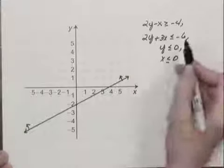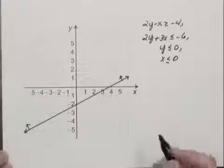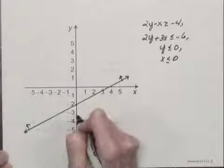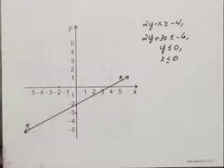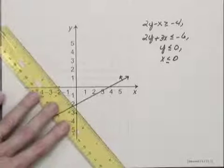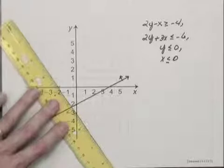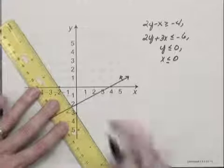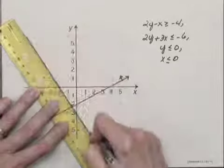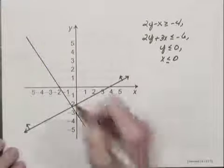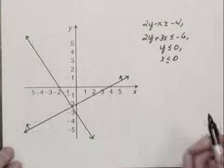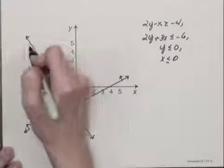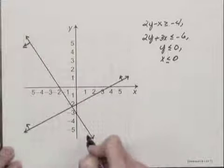For the second related equation, which is 2Y plus 3X equals negative 6, I'd have a point 0, negative 3, and I'd have a point negative 2, 0. Again, graphing with a solid line. And when I find the half plane that's the solution set of that inequality, I would get this half plane.